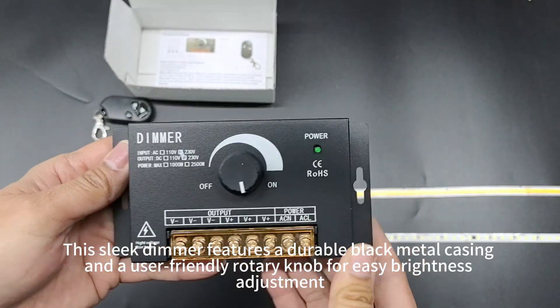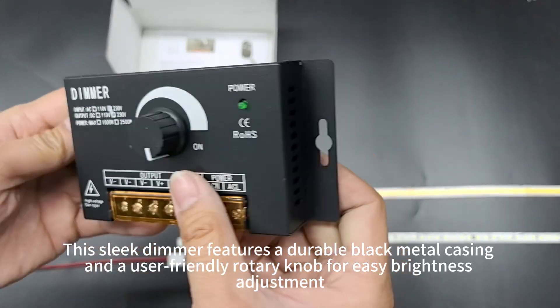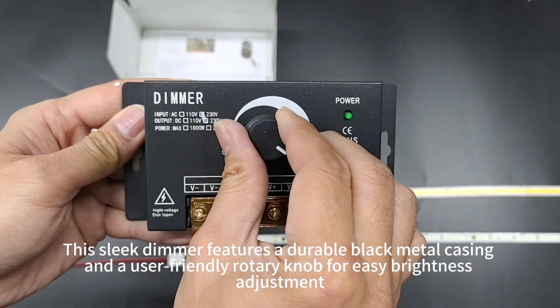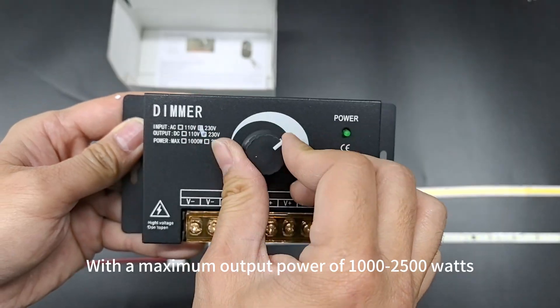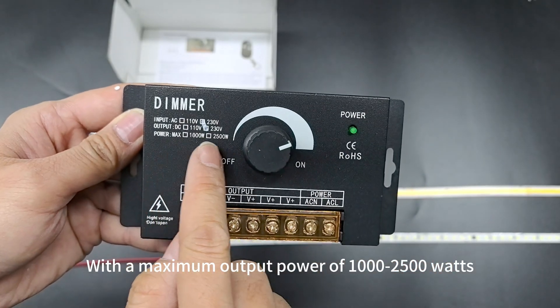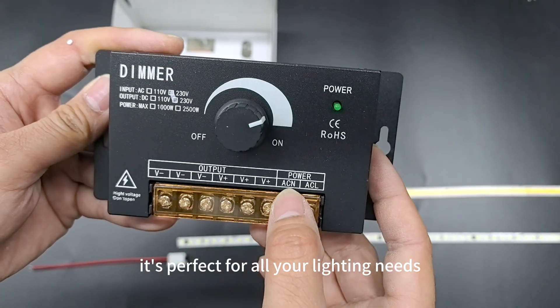This sleek dimmer features a durable black metal casing and a user-friendly rotary knob for easy brightness adjustment. With a maximum output power of 1000 to 2500 watts, it's perfect for all your lighting needs.